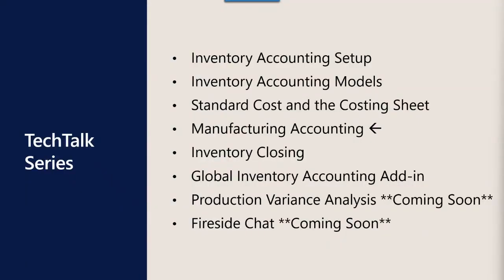This is the fourth tech talk in a series of now seven — and technically kind of eight — that will dive into the details of inventory costing in Dynamics 365 Supply Chain Management. We've officially added a seventh tech talk to the series, mostly because we couldn't fit everything into this one. In part four today, we focus on basic setup, configuration, and cost calculations. Our new seventh session will cover analyzing production variances. Part six will still focus on the new Global Inventory Accounting add-in.